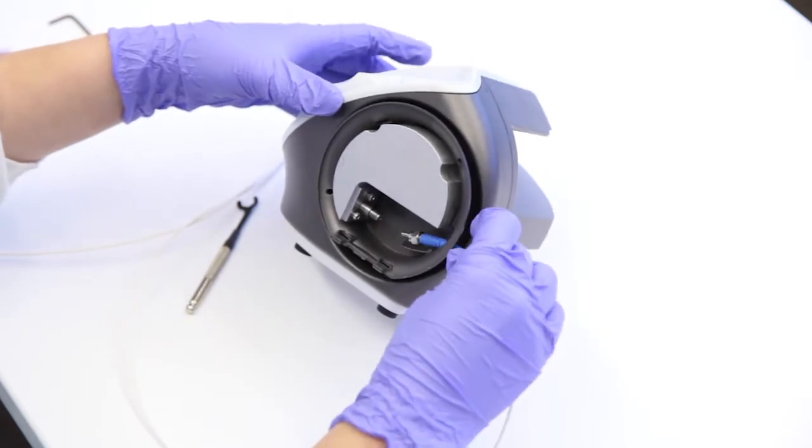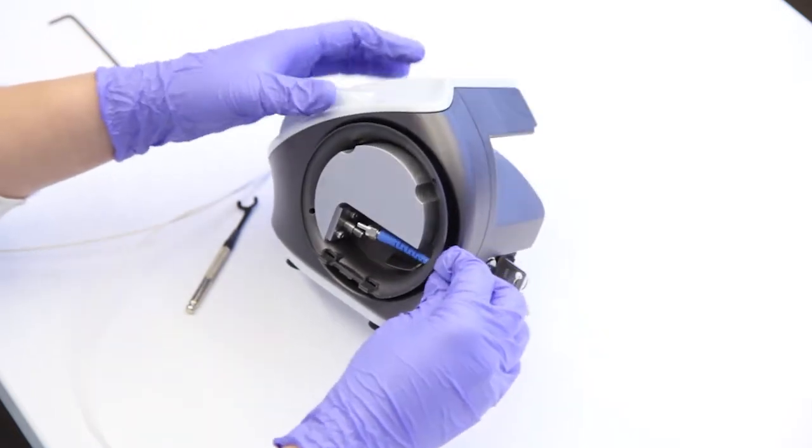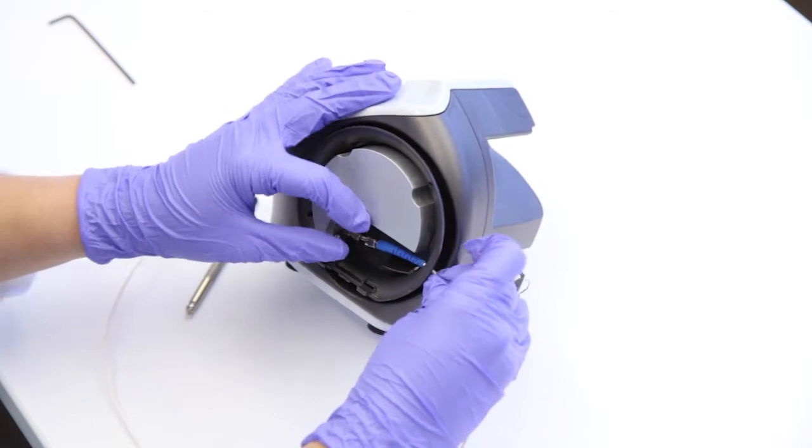Take the new handpiece and thread the SMA connector through the wind body and attach it to the laser diode aperture.